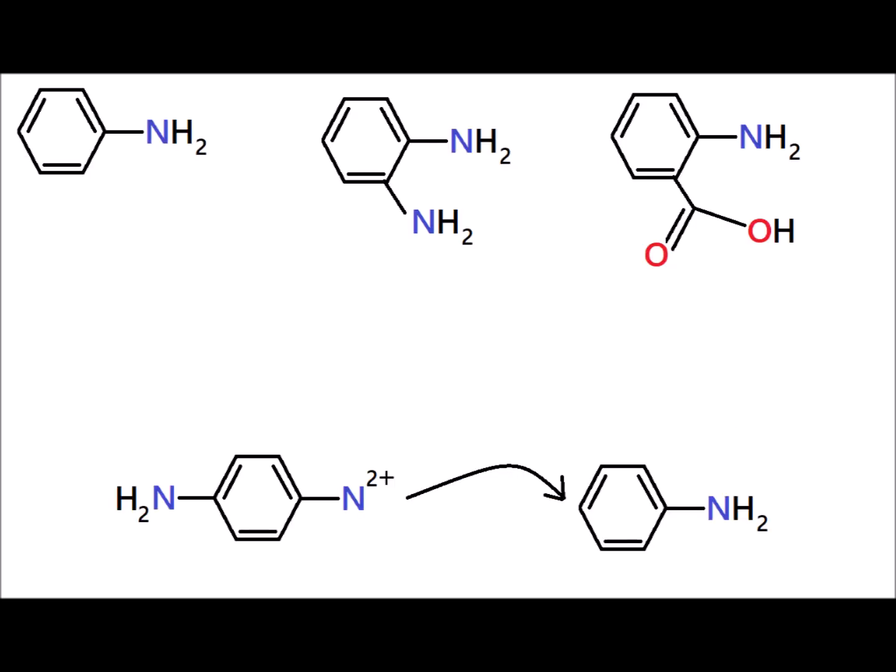Here are examples of structures we can incorporate in the outer rings by starting with aniline, ortho-diaminoaniline, and the one with a carboxyl group next to the amine — known colloquially as anthranilic acid. Because hydroxyl phenolic groups activate the ring just like an amine group does, we can also easily incorporate hydroxyl groups on the outer rings by starting with phenol, catechol, or salicylic acid, which has both a phenol and a carboxylic acid functionality in the same ring.